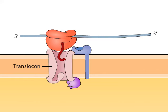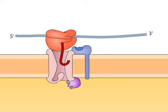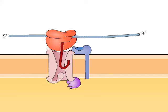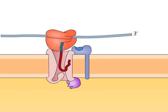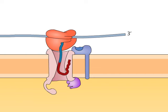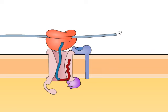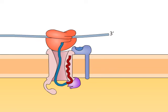Transfer of the ribosome mRNA complex to the translocon allows the signal sequence to interact with short hydrophobic side chains located in the narrow neck of the translocon channel. This interaction opens the translocon by moving the plug away from the translocon channel.